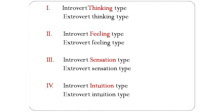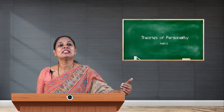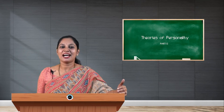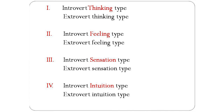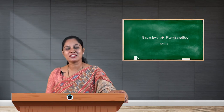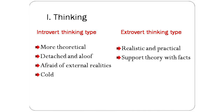The introvert and extrovert classification is applied to each of the four mental structures: thinking, feeling, sensation, and intuition. So we have introvert thinking type, extrovert thinking type, introvert feeling type, extrovert feeling type, introvert sensation type, extrovert sensation type, introvert intuition type, and extrovert intuition type. Let us look at the characteristics: the introvert thinking type are people who are more theoretical in nature, very detached — they never talk to people and are aloof.